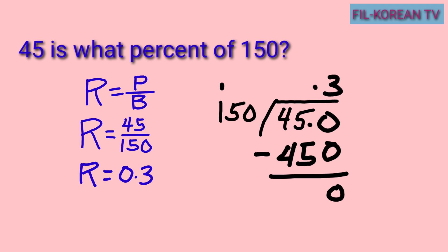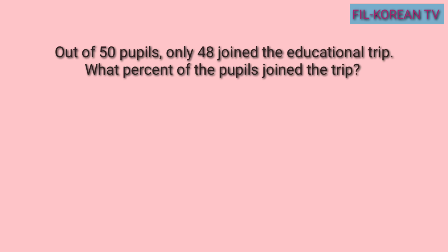Ngayon, itong decimal na 3 tenths ay i-change natin ito into percent. Paano natin ito i-change? I-multiply natin ito sa 100, or ang shortcut — ang technique — i-move lang natin ang decimal point 2 places to the right. Hindi na tayo kailangan mag-multiply pa sa 100. I-move lang natin ang decimal point pa kanan ng dalawang beses: 1, 2. Itong space ay lalagyan natin ng 0. Kaya ang answer ay 30, at lalagyan natin ng percent sign. Ang answer ay 30%.